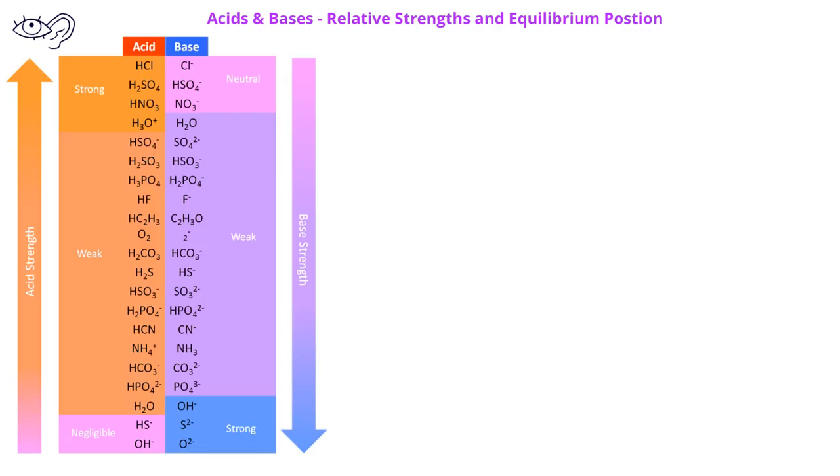In the previous problem, we saw a few different acids and bases, and so one of the questions that can naturally come up is how do we know if an acid is going to be stronger or weaker than another acid? At the same time, how do we know if a particular base is going to be stronger or weaker than any other base?